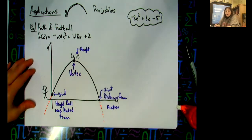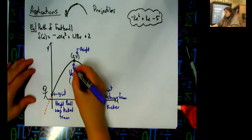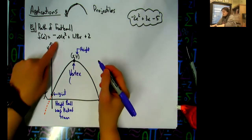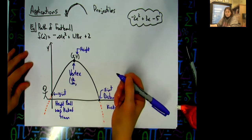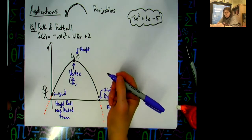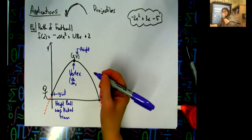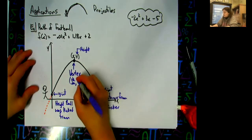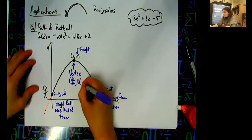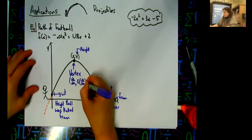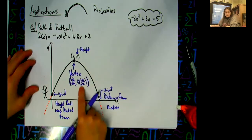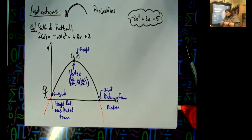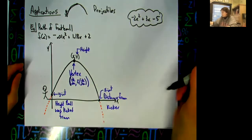To find the x-coordinate of the vertex when the equation is in standard form, we use negative b over 2a. That gives us the x-coordinate. Then we plug that number back into the function to get the y-coordinate, written as f(−b/2a). That's a review from Algebra 2.